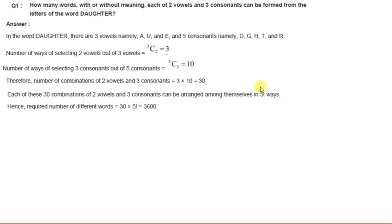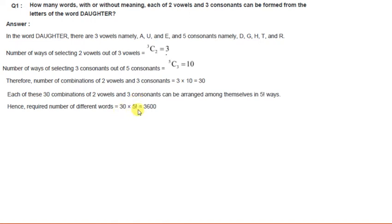Once we have selected the 5 letters, we can arrange them in factorial 5 ways. So the number of different words which can be formed will be 30 multiplied by factorial 5.